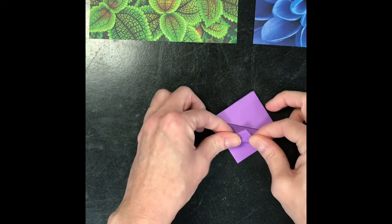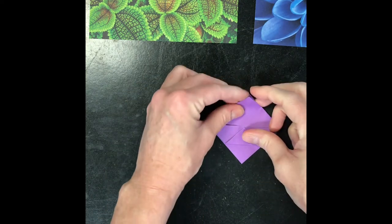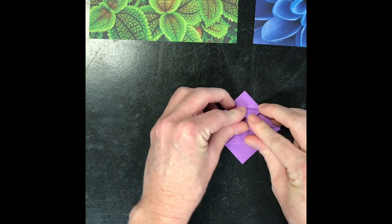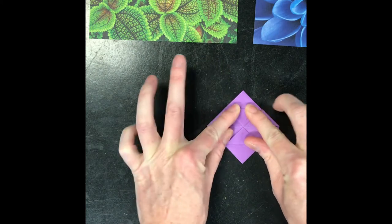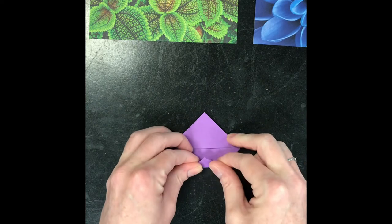But right now, I'm going to take the middle corners and fold them in to that center line. And we're going to do it top and bottom on one side, and then we're going to do the top and bottom on the other side.